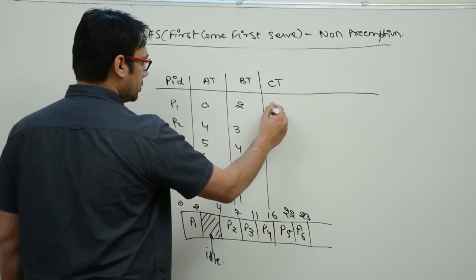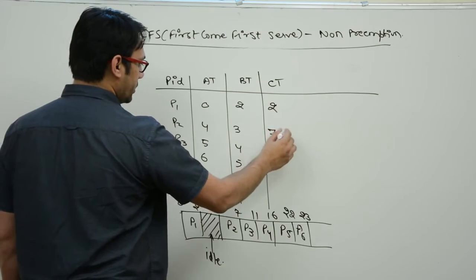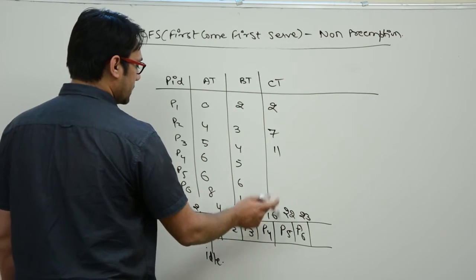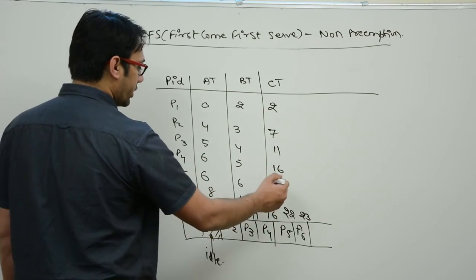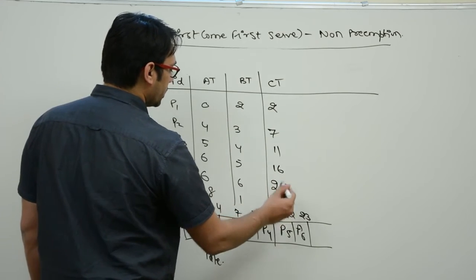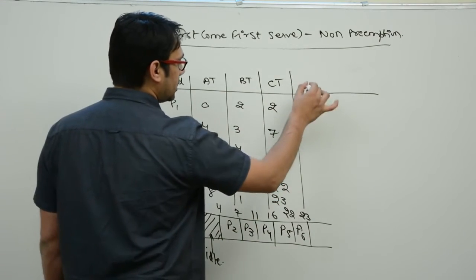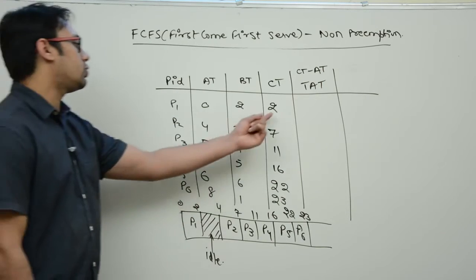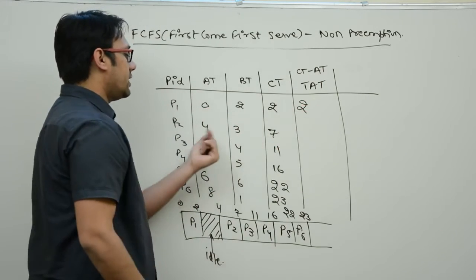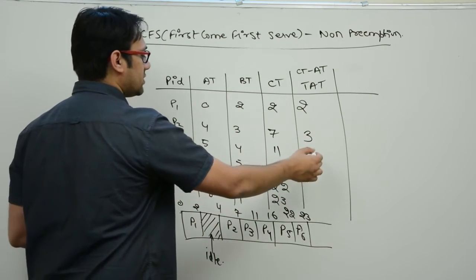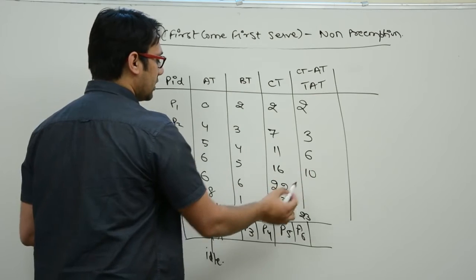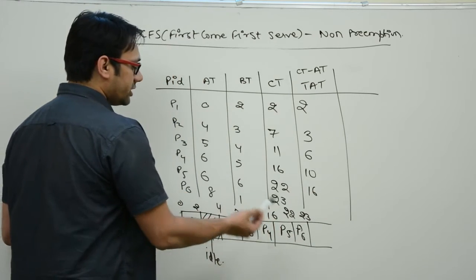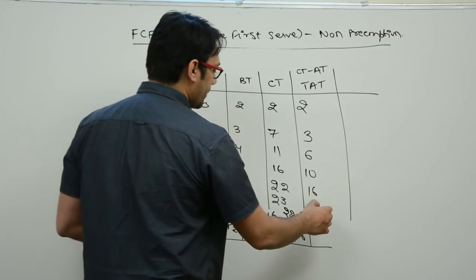The completion times are: p1 at time 2, p2 at time 7, p3 at time 11, p4 at time 16, p5 at time 22, and p6 at time 23. Turnaround time is completion time minus arrival time: p1=2, p2=3, p3=6, p4=10, p5=16, p6=15.